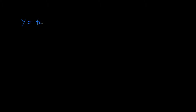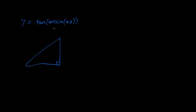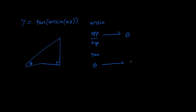We are going to take the derivative of tangent of arcsine of AX, where A is a constant. First, we will set up a triangle to help us translate this. Arcsine is a function that translates an opposite side over hypotenuse ratio of a right triangle into an angle, which we'll call theta. Tangent is a function which turns our angle theta into an opposite side over adjacent side.